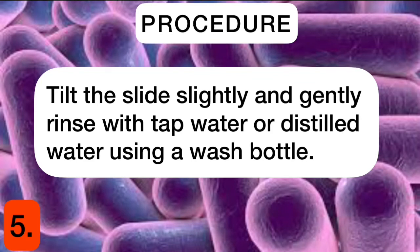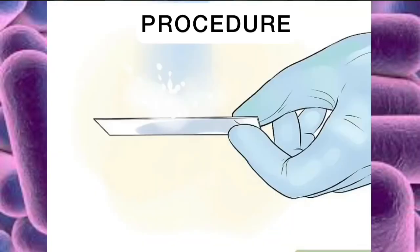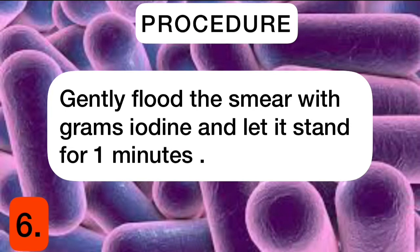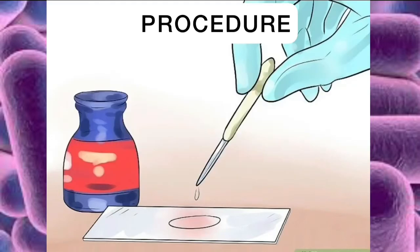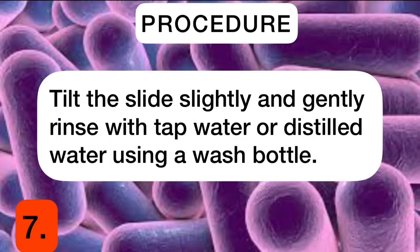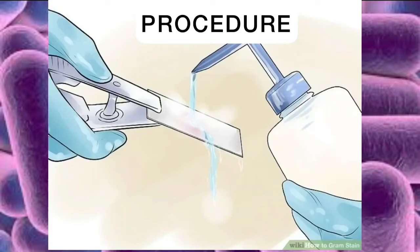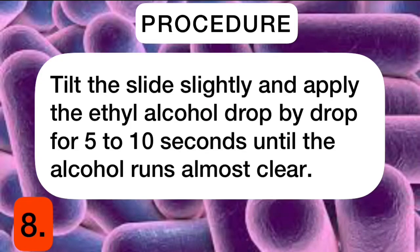Tilt the slide slightly and gently rinse with tap water or distilled water using a wash bottle. Gently flood the smear with Gram's iodine and let it stand for one minute. Tilt the slide slightly and gently rinse again with tap water or distilled water. Then tilt the slide slightly and apply the ethyl alcohol drop by drop for five to ten seconds until the alcohol runs almost clear.